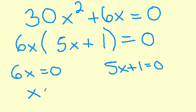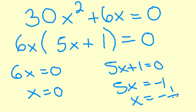0 divided by 6 is 0. Subtract 1 from both sides over here negative 1 and x is equal to negative 1 over 5.